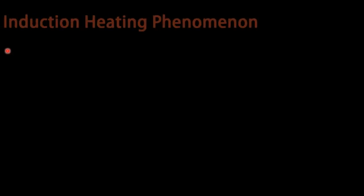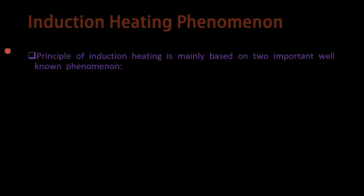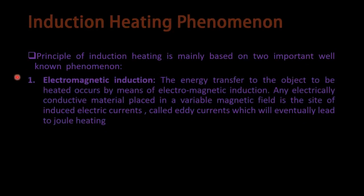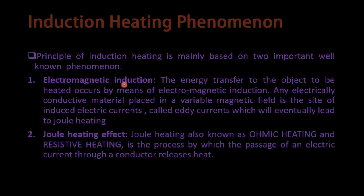This slide represents the induction heating phenomena. The principle of induction heating is mainly based on two important well-known phenomena. First is electromagnetic induction: the energy transfer to the object to be heated occurs by means of electromagnetic induction. Any electrically conductive material placed in a variable magnetic field will have induced electric currents, called AC currents, which eventually lead to Joule heating. The second parameter is the Joule heating effect, also known as ohmic heating or resistive heating, which is the process by which the passage of an electric current through a conductor releases heat.